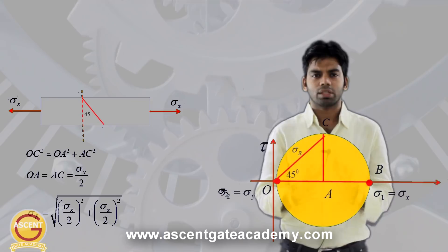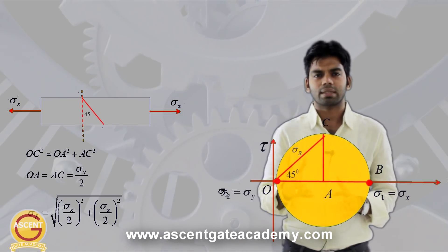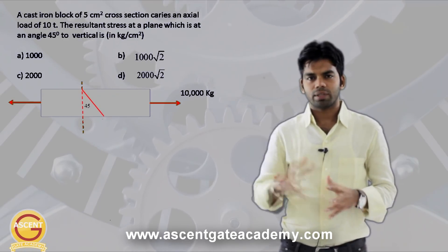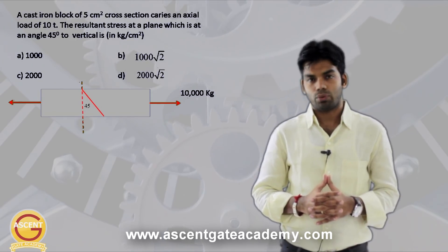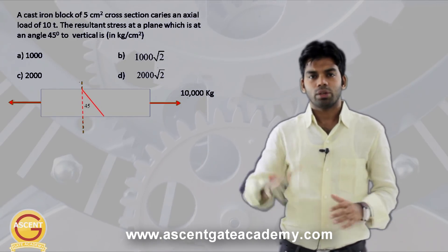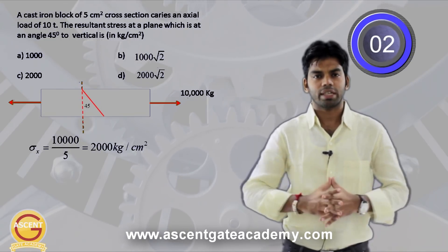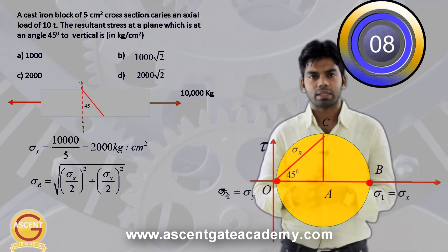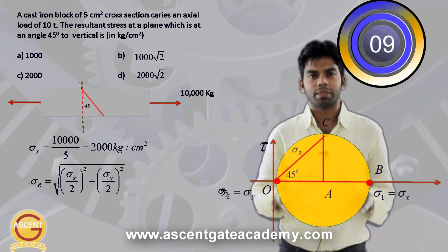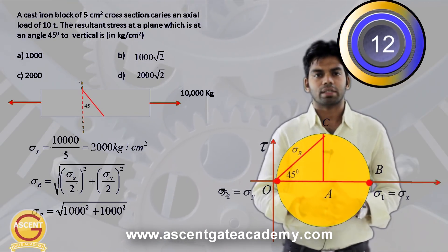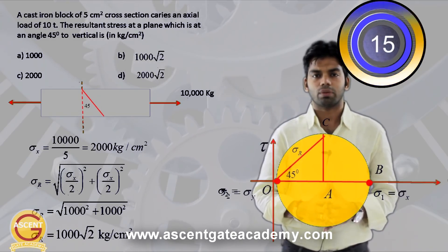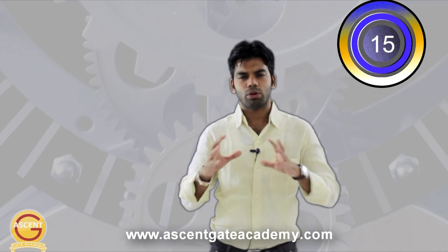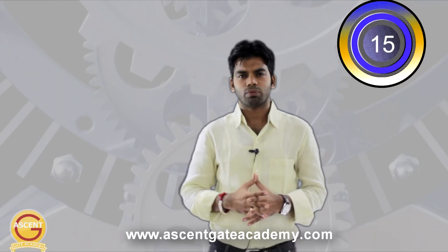Coming to our question: we have a bar subjected to an axial force of 10,000 kg and we need the resultant stress. So sigma_x = 10,000 / (5×5) = 2,000 kg/cm². The resultant stress equals the square root of 1,000² + 1,000², which gives 1,000√2 kg/cm². You can see how easily and quickly such complicated questions can be solved with Mohr circle. There are many more cases of Mohr circle — refer to my other lectures for those.